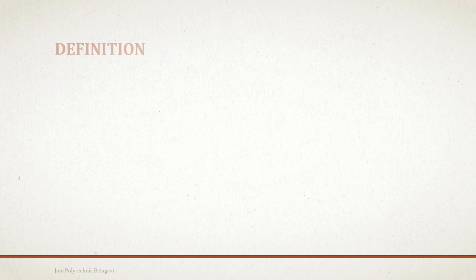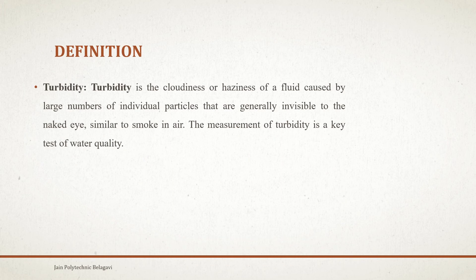We'll start with the definition of turbidity. Turbidity is the cloudiness or haziness of a fluid caused by large numbers of individual particles that are generally invisible to the naked eye, similar to smoke in air. The measurement of turbidity is a key test of water quality. As discussed earlier, colloidal particles — if these colloidal particles are less in concentration or amount, then we say the turbidity of the water is less.